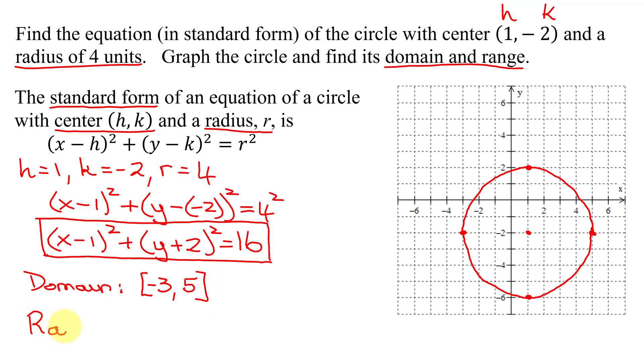The range are the y values. So coming in from negative infinity, the first y value I hit is negative 6. So I have square bracket negative 6, all the way up to this y value, which is positive 2. So there is the domain and the range of this circle.